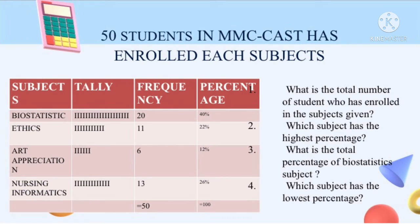Then we have a second example. This time we are going to answer questions given by the percentage of each category. Number 1: what is the total number of students who enrolled in the subjects? You can see in the frequency table that N equals 50, so the answer is 50. Number 2: which subject has the highest percentage? It is biostatistics with 40%. And what is the total percentage of biostatistics? The answer is 40%.